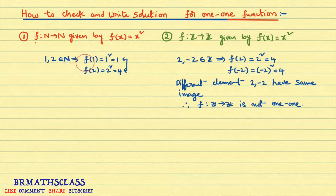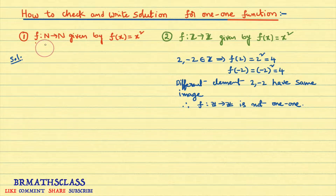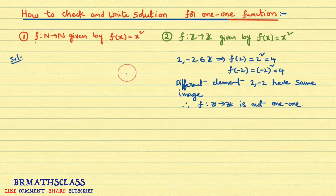But when the function is a one-one function, you cannot write the answer like that. You cannot just pick an example like 3 and 4, note that 3² = 9 and 4² = 16, and say because these two different natural numbers have different images this function is one-one. You cannot write that. We must follow the standard procedure to write the solution for a one-one function.